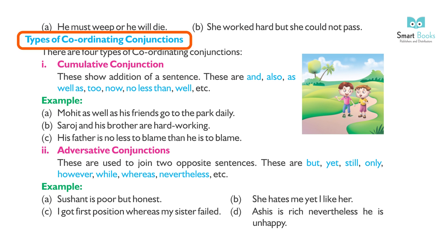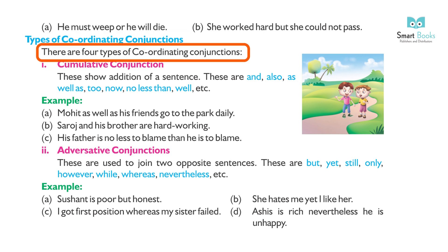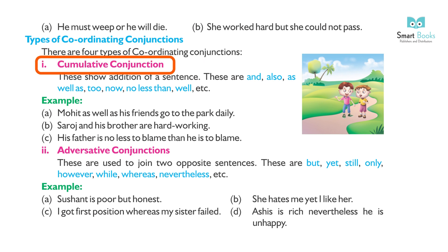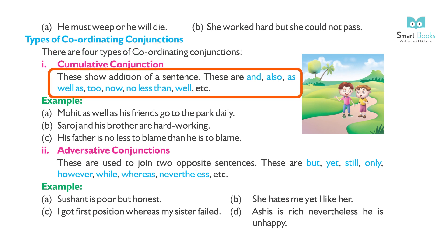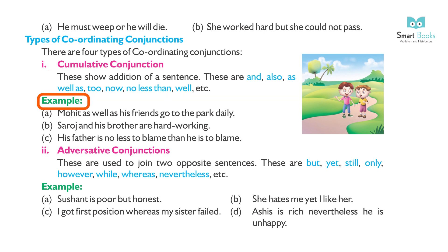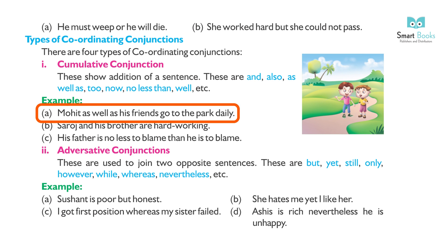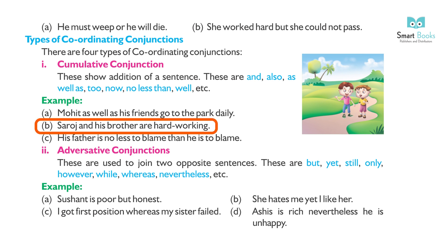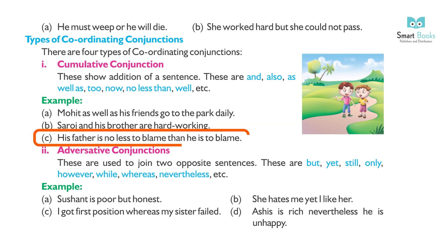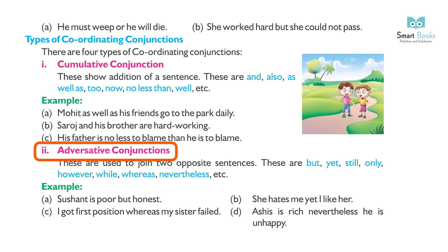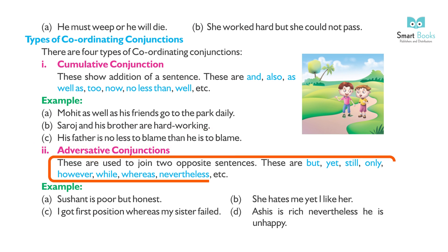Types of coordinating conjunctions: 1. Cumulative conjunctions — these show addition of a sentence. These are: and, also, as well as, too, now, no less than, well, except. Example: (a) Mohit as well as his friend goes to the park daily. (b) Saroj and his brother are hard-working. (c) His father is no less to blame than he is.